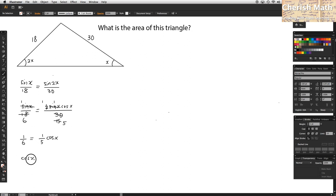After simplifying, cos x equals 5 over 6, and the value of x is 33.6 degrees.